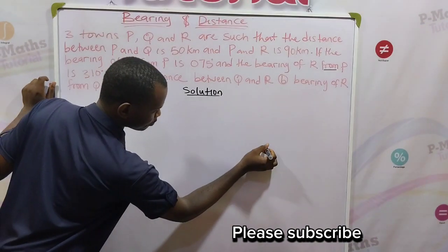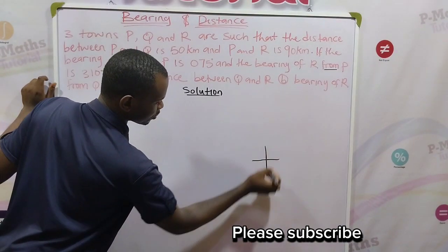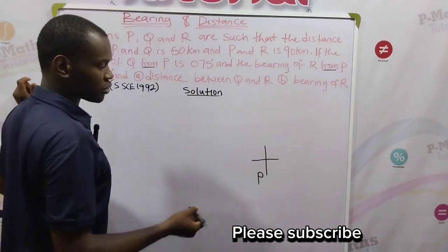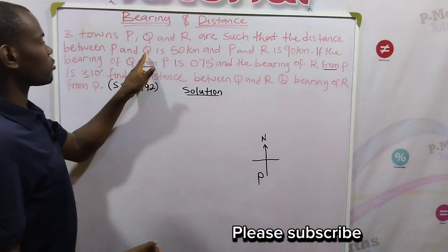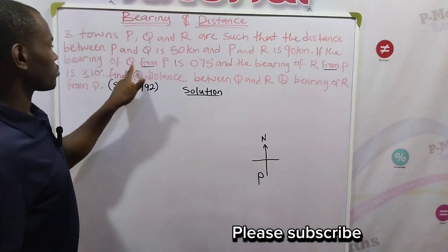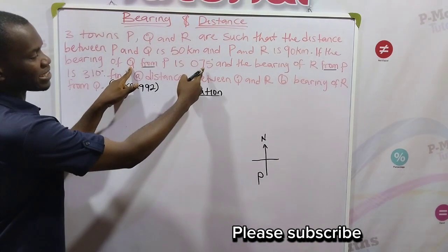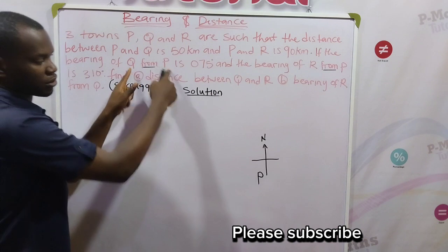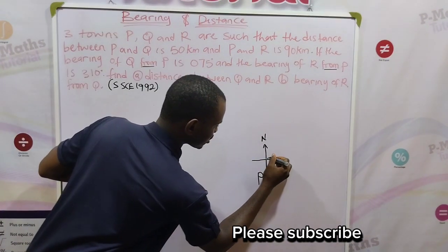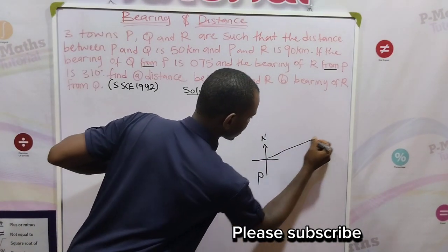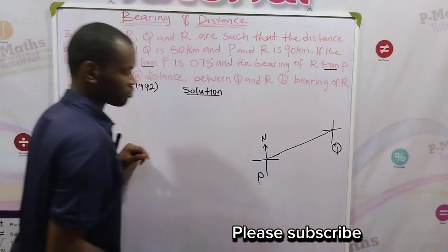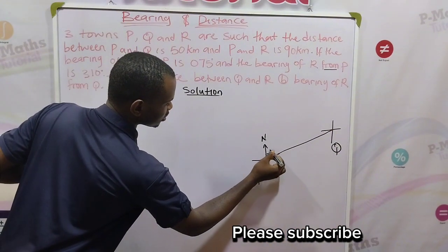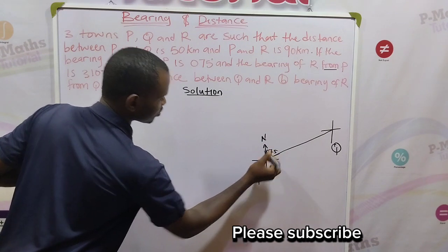So all the movements are starting from the north pole of P. The first thing is to draw the cardinal point of P. This is position P. Here is our north. Now let's locate Q at 75 degrees of P. So 75 is in the first quadrant somewhere here. So this would be position Q, and this is 075 degrees.